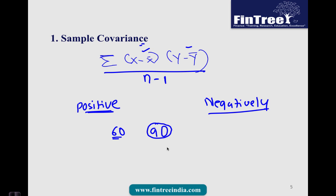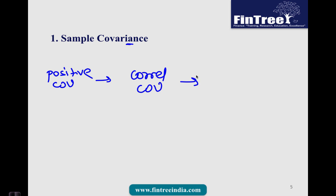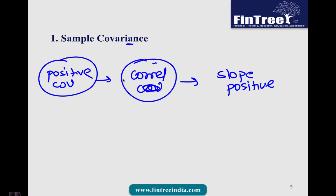So larger covariance does not indicate a stronger relationship. The second difficulty is that the unit of covariance is generally percentage squared when dealing with percentage data, which is meaningless, and therefore the usage of covariance is limited. One small trick to remember for the exam: if covariance is positive, then correlation will be positive, and if correlation is positive, then automatically the slope is going to be positive.